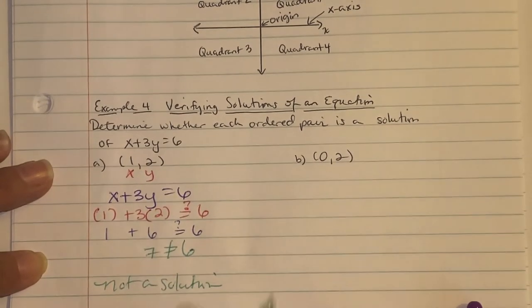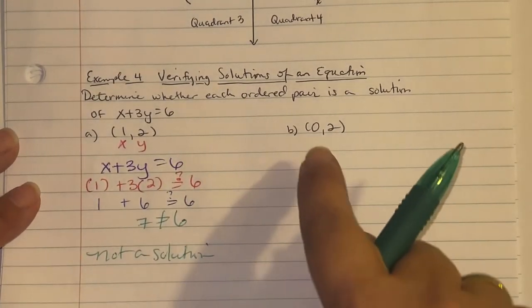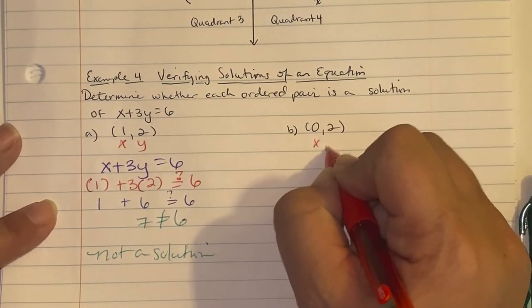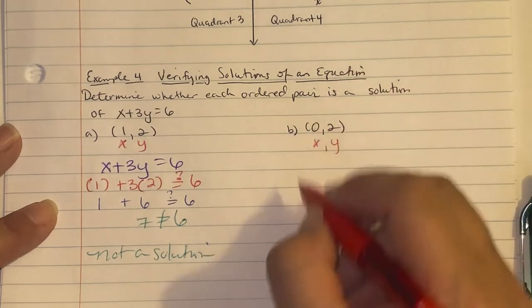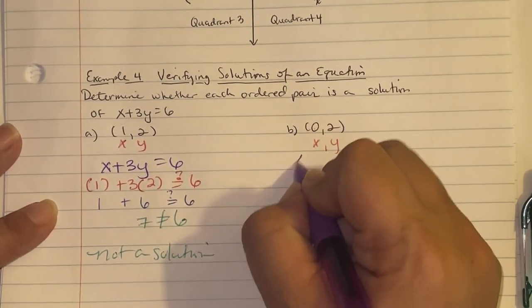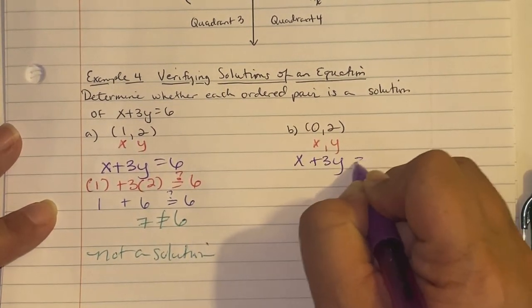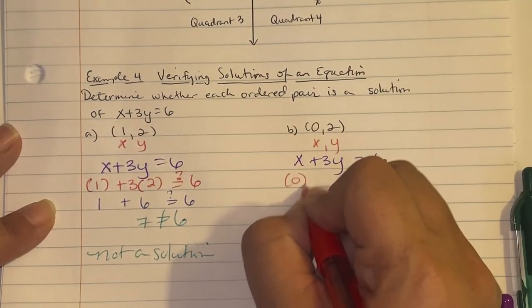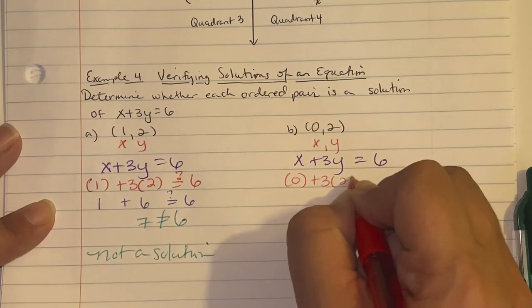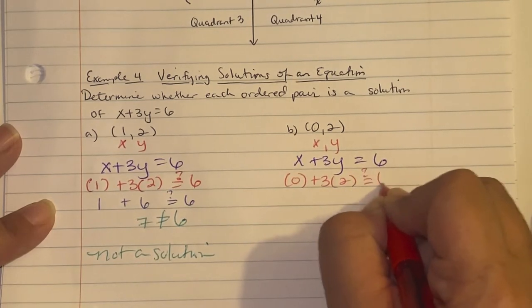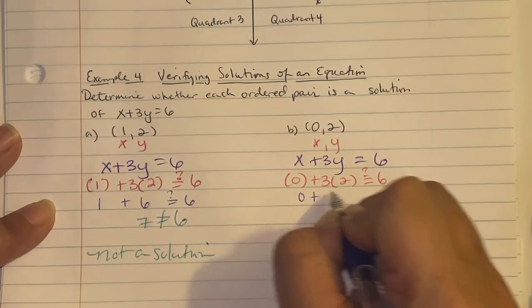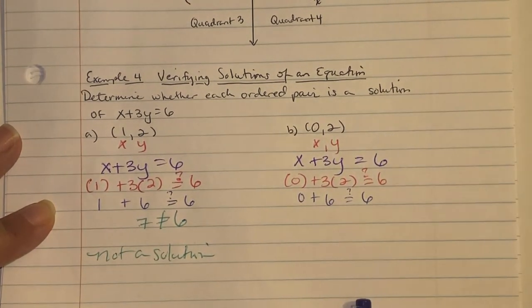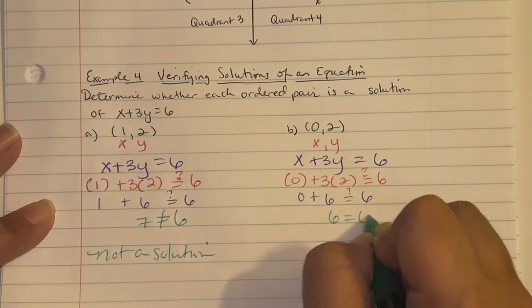Next, try the ordered pair (0, 2). Write the equation again: x plus 3y equals 6. Substituting x equals 0 and y equals 2 gives zero plus six equals six. Six on the left equals six on the right, so yes, (0, 2) is a solution.